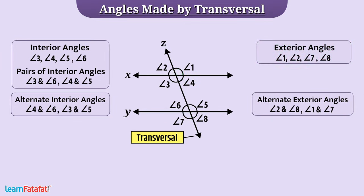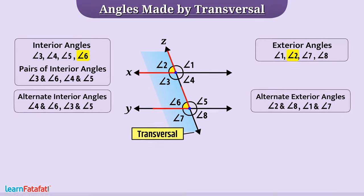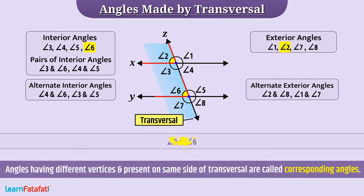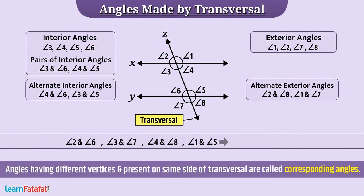Angle 2 and angle 6 have different vertices and both are present on the same side of the transversal. Angle 2 is an exterior angle and angle 6 is an interior angle, i.e., they are in corresponding positions. Such angles are called corresponding angles. Here, these are also a pair of corresponding angles.